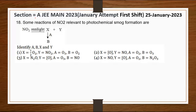Now we are moving to question number 18 of Section A, JEE Main 2023, 25 January, first shift. The question is: some reactions of NO₂ relevant to photochemical smog formation are — let's look at this reaction.